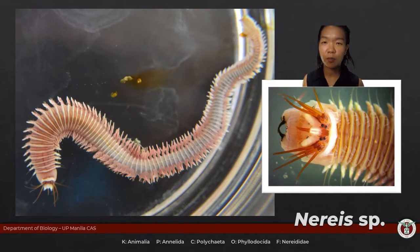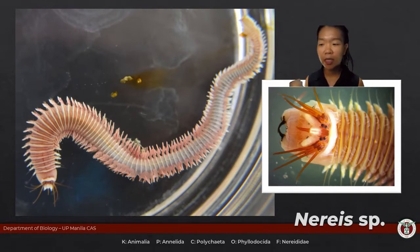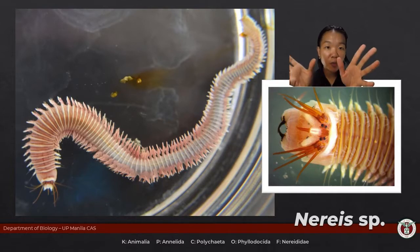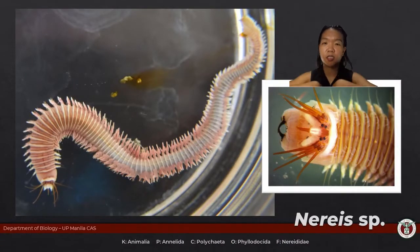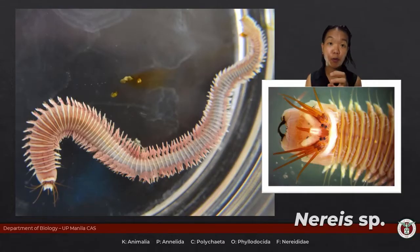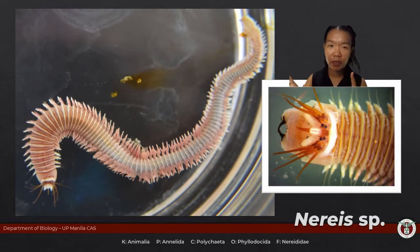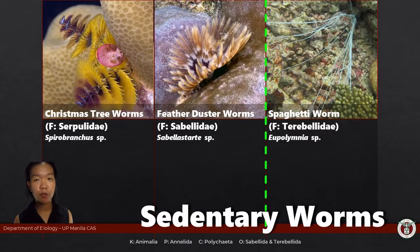Nereis — commonly called ragworms or clamworms because they inhabit the same places as clams — are under order Phyllodocida. These are polychaetes with a muscular eversible pharynx equipped with claws that can evert — going from inside to outside. The prostomium contains most sense organs like the eyes and sensory papillae, and the peristomium contains the pharynx.